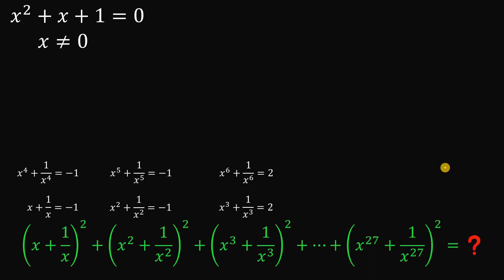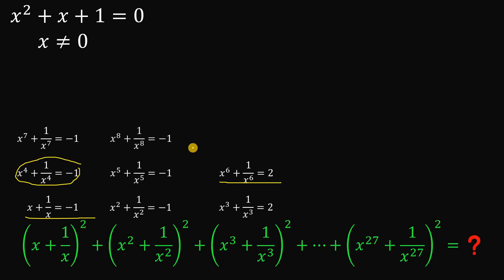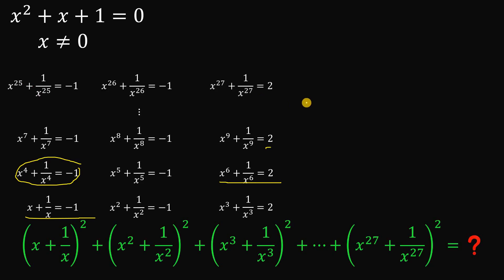Now we can see the pattern. The value of xⁿ + 1/xⁿ follows a repeating cycle of −1, −1, 2 for every group of three consecutive powers. This continues all the way through: x²⁵ + 1/x²⁵ = −1, x²⁶ + 1/x²⁶ = −1, and x²⁷ + 1/x²⁷ = 2.